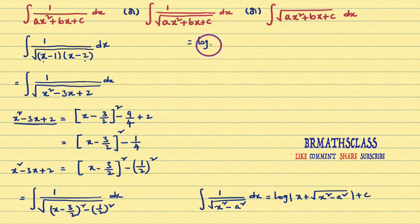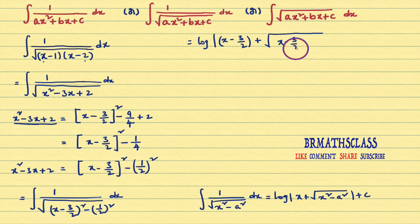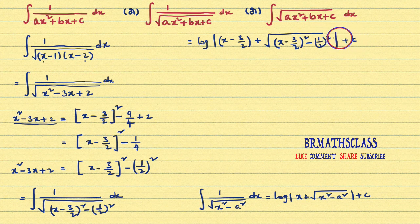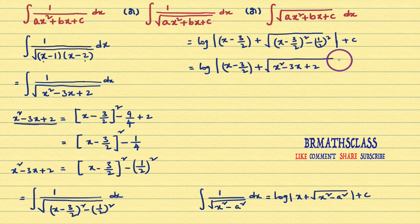Applying the formula: this equals log|x - 3/2 + √((x - 3/2)² - (1/2)²)| + c. One more simplification step: (x - 3/2)² - (1/2)² can be written as x² - 3x + 2. So the final answer is log|x - 3/2 + √(x² - 3x + 2)| + c. That's it. A little bit of practice is needed — if you practice 4 to 5 problems continuously, you will find that these problems are very easy.